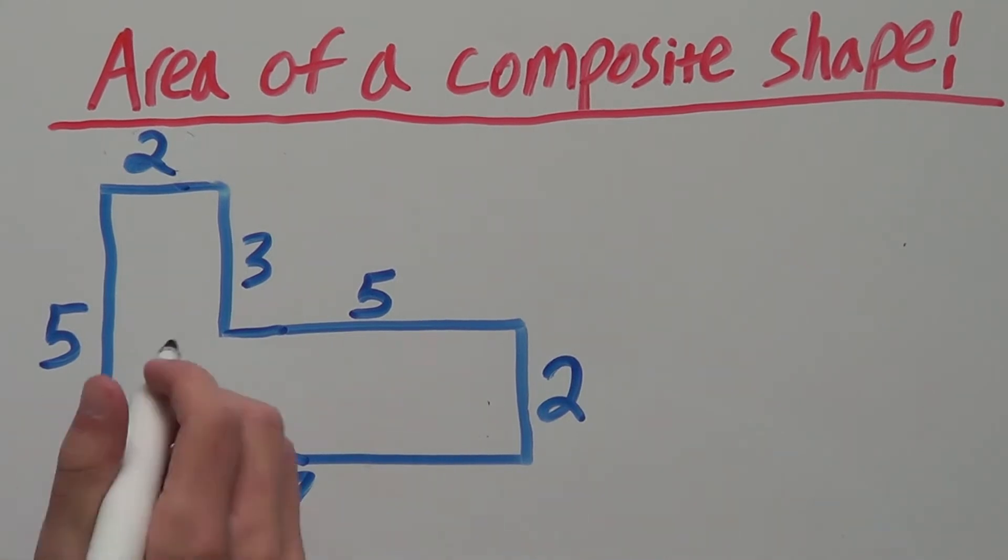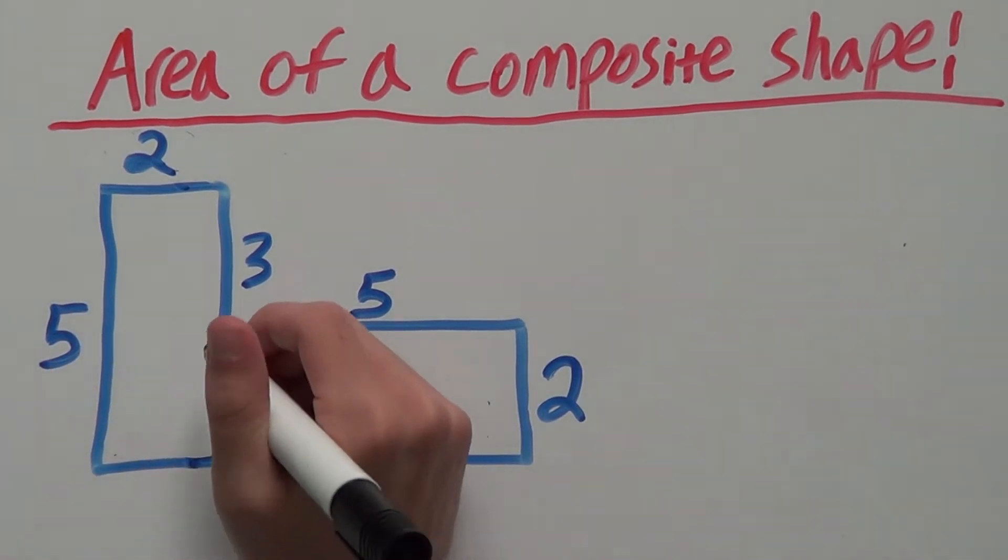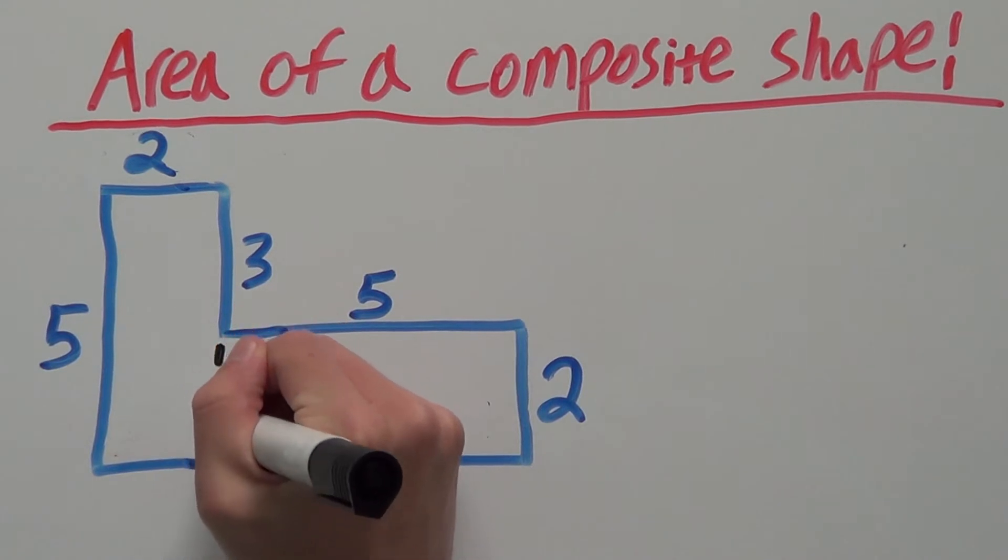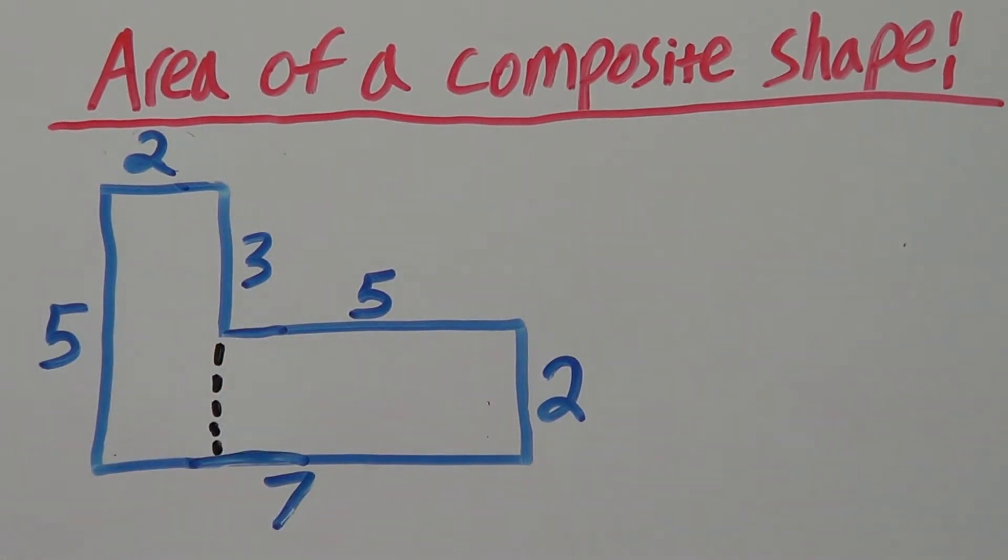In this composite shape here, we can see we can draw a line right here which separates this composite shape into two rectangles.